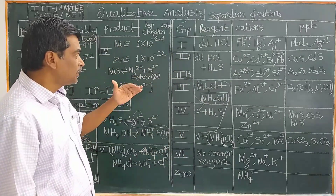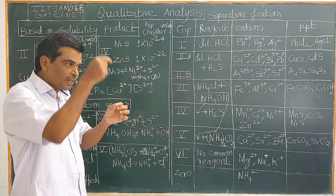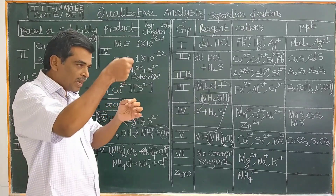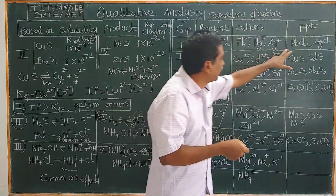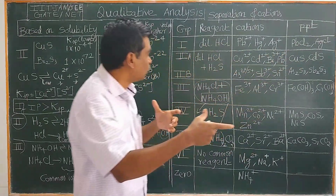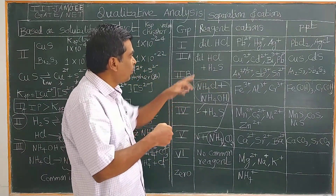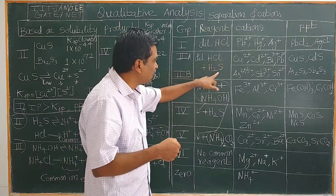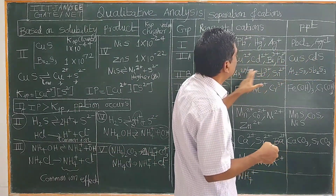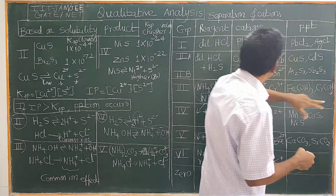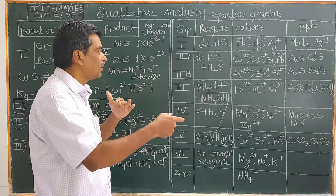For the second group, to the original solution you add dilute HCl. Take a test tube, add the original solution and add a few drops of dilute HCl. If you get a precipitate, it is a first group cation. If you don't get a precipitate, then pass H₂S gas. In the presence of dilute HCl, passing H₂S will give copper sulfide, cadmium sulfide, arsenic sulfide, stannous sulfide, etc., if second group metal ions are present.